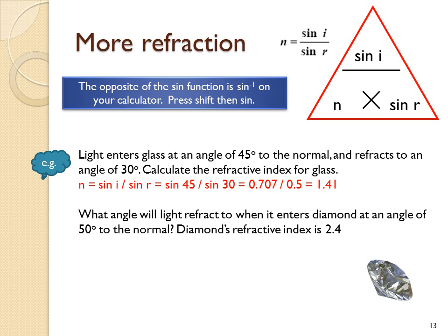In this example, we want to know what angle light will refract to when it enters diamond at an angle. Diamond's refractive index is 2.4. Because we want to know what angle it refracts to, we need to calculate r. Our formula rearranges to give us sine of r. Sine of r is sine i over n, which comes out to be 0.319. That isn't the angle of refraction though. To find that, we need to use the inverse sine function. So r is the inverse sine of 0.319, which gives 18.6 degrees.